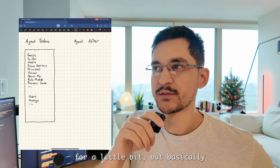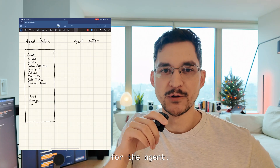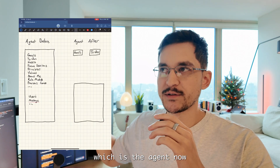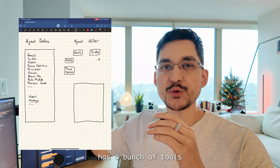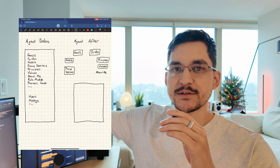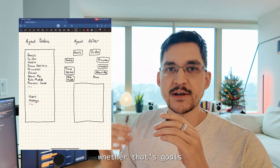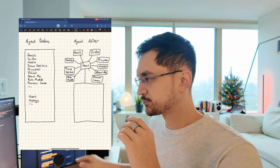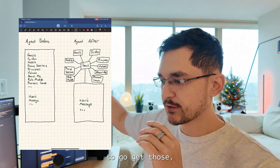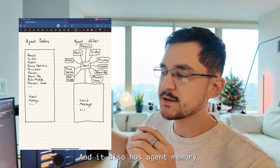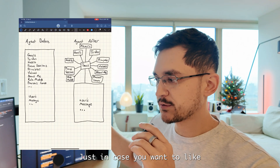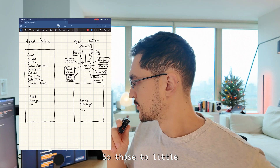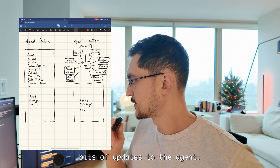That works for a little bit, but basically it's like a context overload for the agent. So I switched it to a different model where the agent now has a bunch of tools to go and fetch the relevant context, whether that's goals, focus sessions, or to-dos. It also has agent memory, just in case you want to say what your preferences are or anything like that. So those two little bits of updates to the agent.